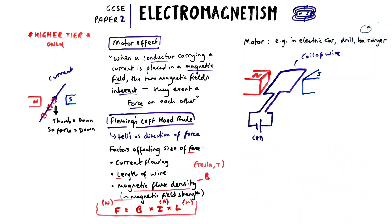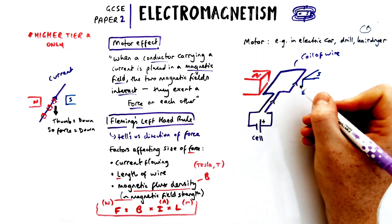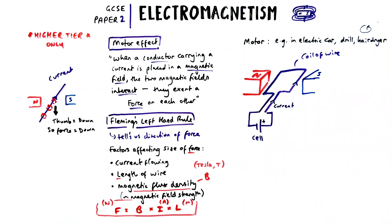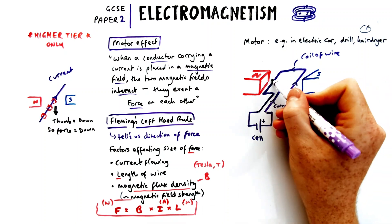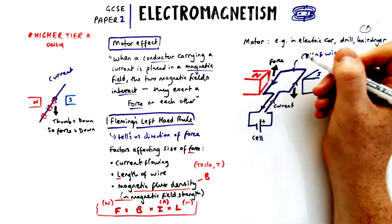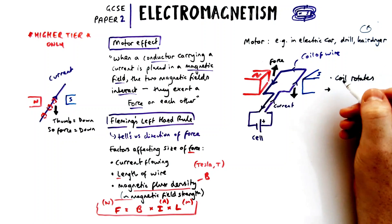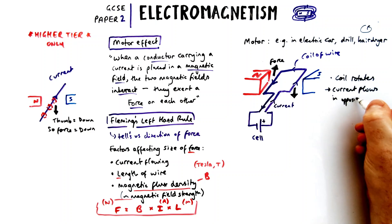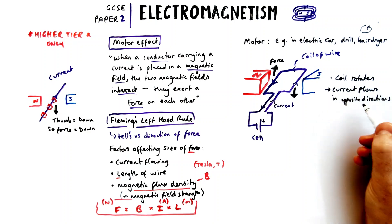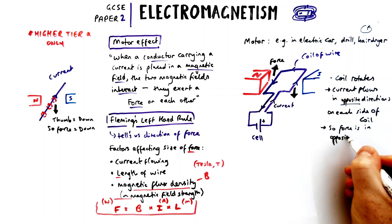When I connect this to a power supply, on the right-hand side the current is flowing in the same direction as my example, so using Fleming's left-hand rule the force is acting downwards. On the other side of the coil the current is flowing in the opposite direction — towards me — so the force goes the other way: left side up, right side down. This causes the coil to rotate. In an exam answer you'd say the current flows in opposite directions on each side so the force is in opposite directions, causing rotation.